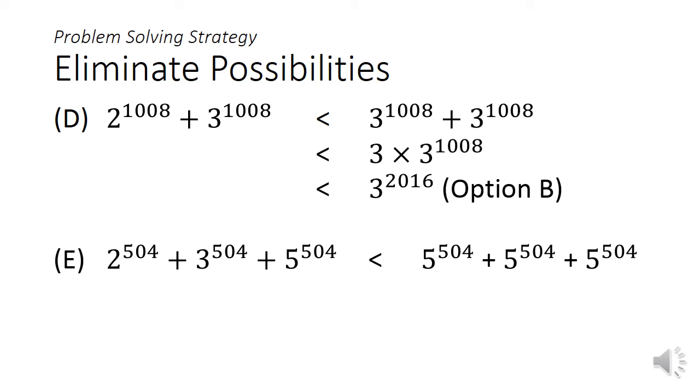In option E, I have 2 to the power of 504 plus 3 to the power of 504 plus 5 to the power of 504. That is less than 5 to the power of 504 plus 5 to the power of 504 plus 5 to the power of 504. That's only 3 sets of 5 to the power of 504. I can add 2 more sets to give us 5 times 5 to the power of 504. That would be the same as 5 to the power of 505, which is way less than 5 to the power of 1008. Hence option C is greater than option E, eliminating option E.